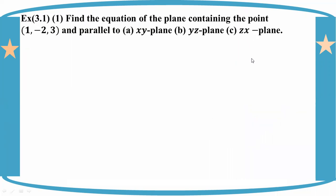SSI, example 3, point number 1: Find the equation of the plane containing the point 1, minus 3. This is the plane of the plane. This plane is parallel to a plane.